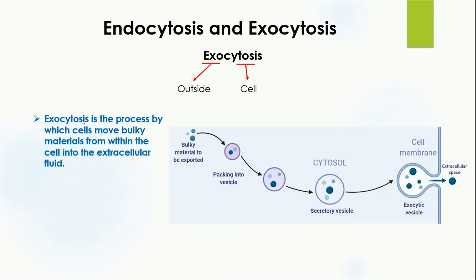Here is a diagram representing exocytosis. The bulky material inside the cell needs to be exported. It is packed into a vesicle called the secretory vesicle. This vesicle is taken from the cytoplasm and fuses with the cell membrane. During fusion, the other side of the secretory vesicle opens, releasing all the bulky material out of the cell. This vesicle is then known as the exocytic vesicle.